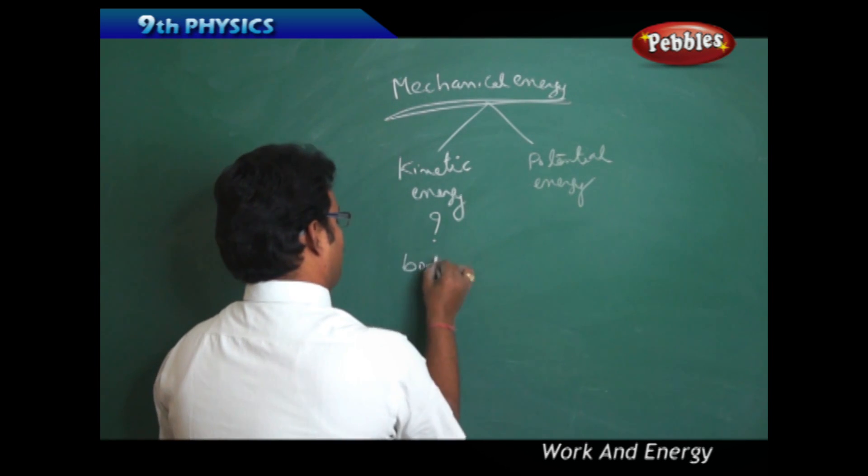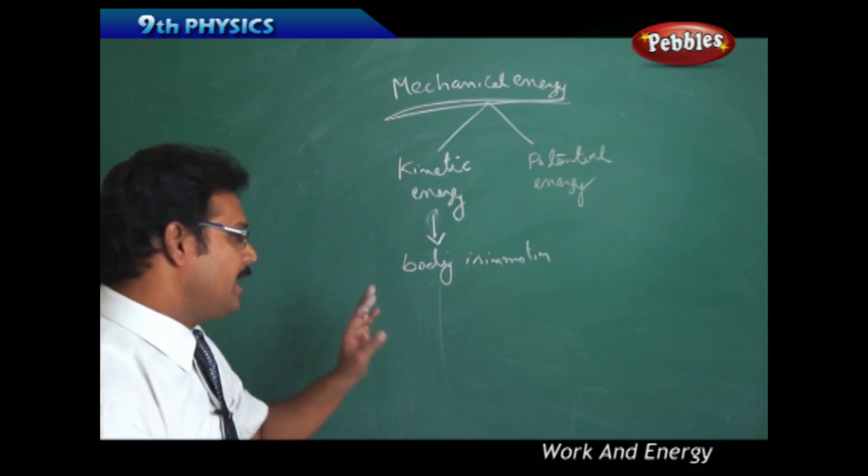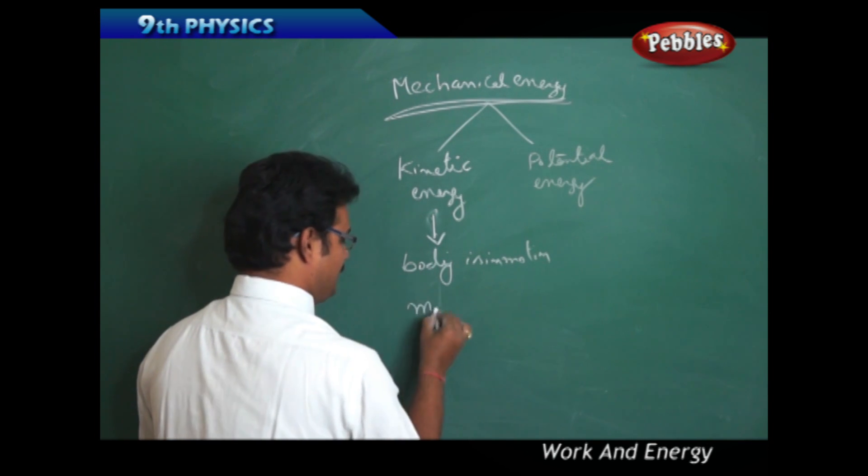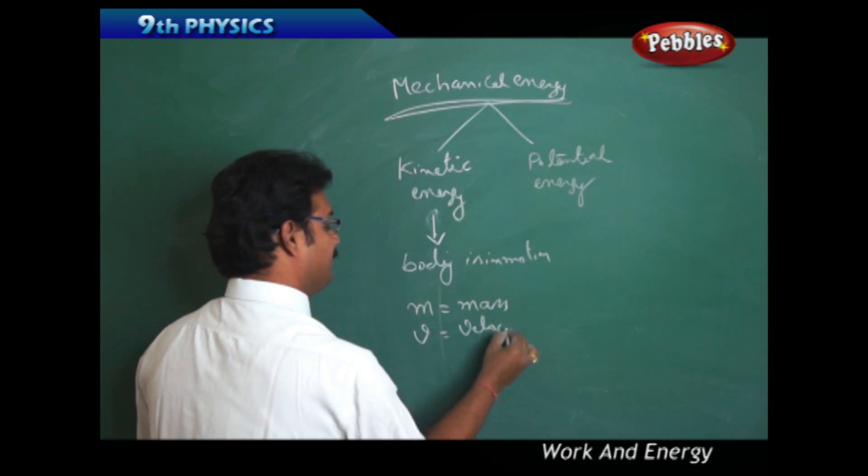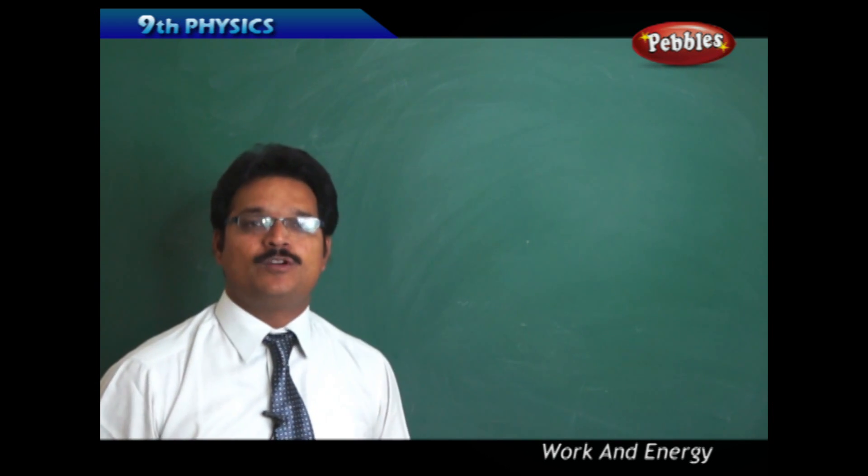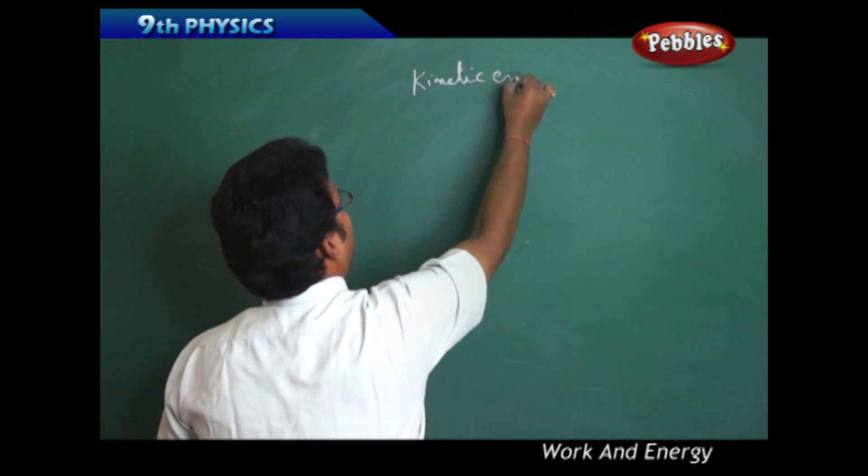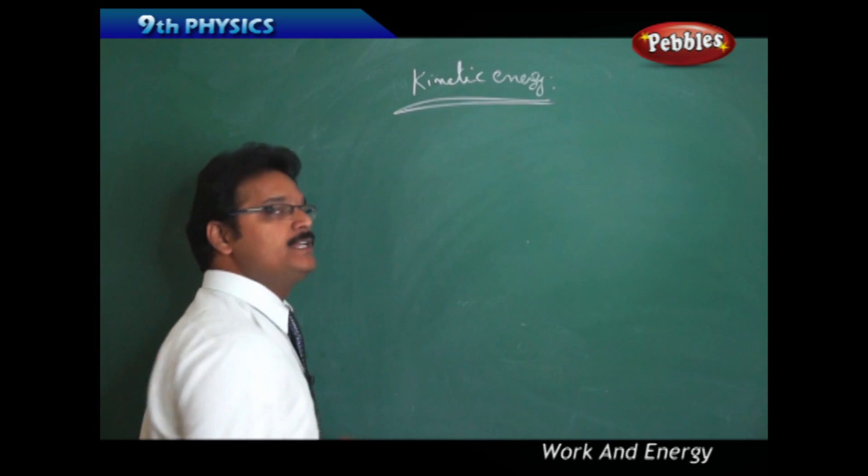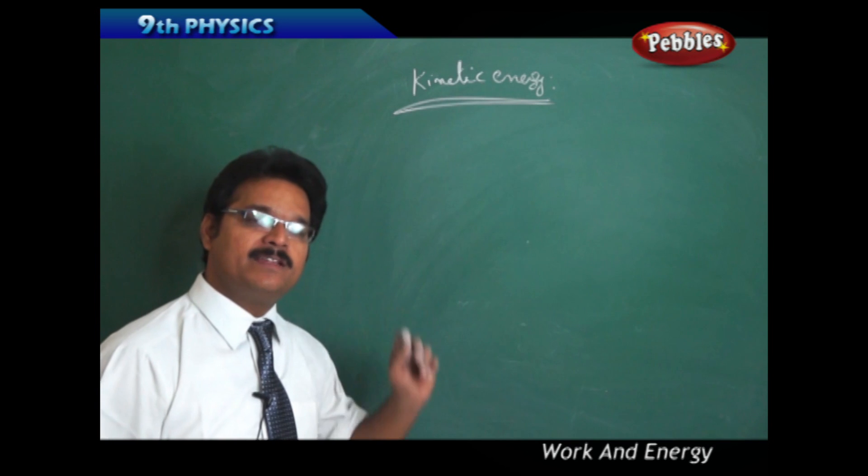Kinetic energy is the energy generated whenever a body is in motion. Kinetic energy depends on mass, which is M, and velocity of the body, V. Now let's move on deeper into the kinetic energy concepts. I told you that kinetic energy depends upon mass and velocity of the body. How? Let me derive a formula for kinetic energy.